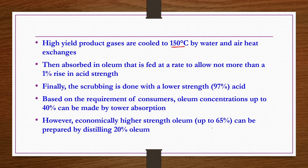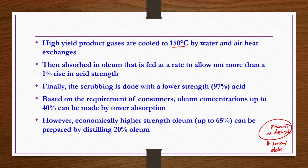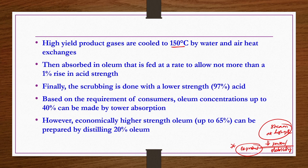High yield product gases from the second stage are cooled to 150 degrees centigrade and absorbed in oleum, fed at a rate allowing not more than 1 percent rise in acid strength. Final scrubbing uses 97 percent sulphuric acid. Oleum concentrations up to 40 percent can be made by tower absorption; higher strength oleum up to 65 percent can be prepared by distilling 20 percent oleum. The absorption reactions are exothermic, generating high-pressure steam sufficient for electricity production — making power a co-product of this process.